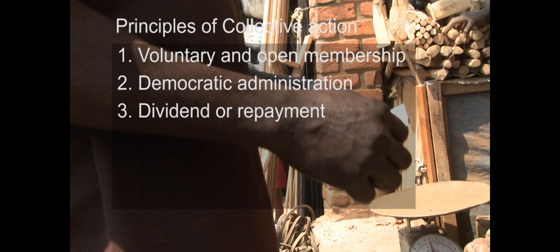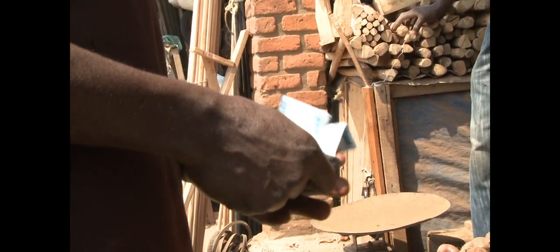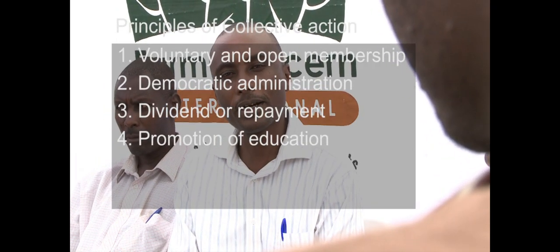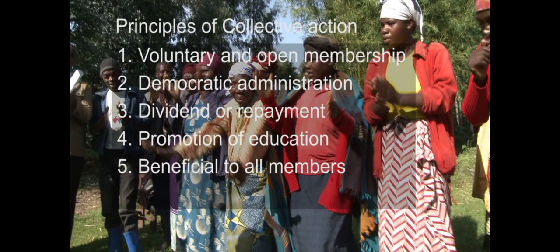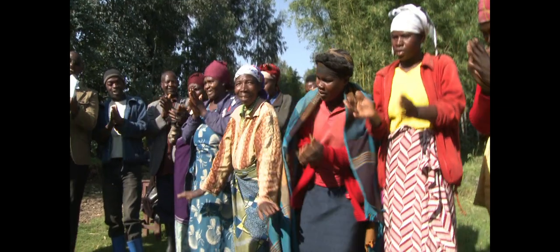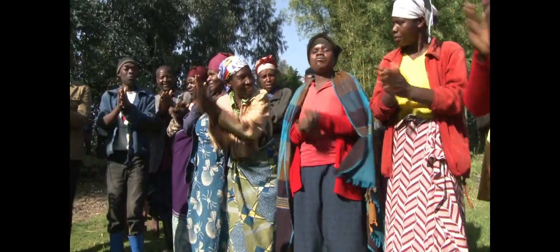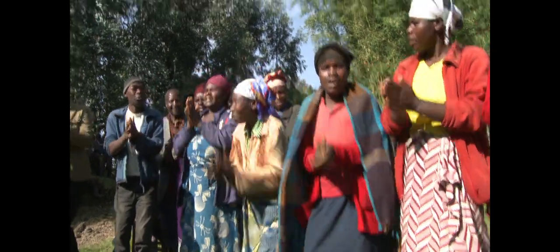3. Dividend or repayment — if the activity is run by the group and the group earns any surplus, it should be distributed among the members depending on their contribution to the surplus. 4. Promotion of education — there should be education for all the members on various issues. 5. Beneficial to all members — all efforts of the group should go to the interest or benefit of all the members.